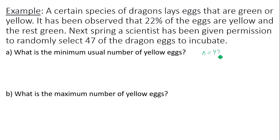47 trials, probability of a success, meaning we pick out a yellow egg. Yellow egg is considered a success. And Q is always 1 minus P, or 1 minus 0.22, which gives you 0.78.